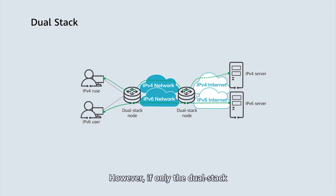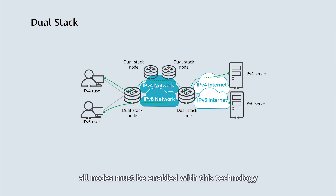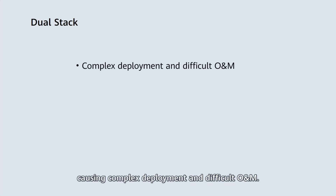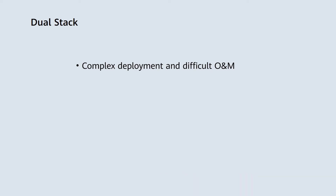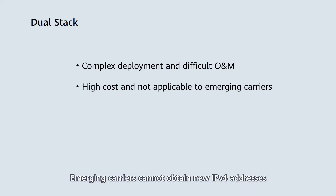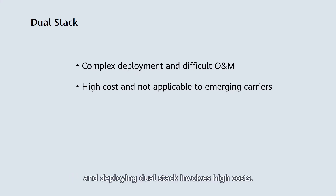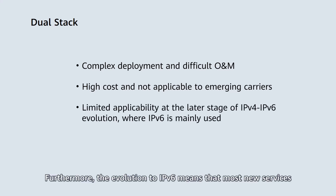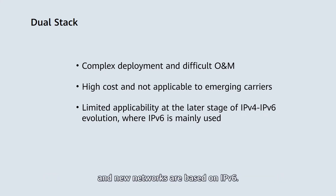However, if only the dual stack technology is used during IPv4 to IPv6 evolution, all nodes must be enabled with this technology in order to maintain both IPv4 and IPv6 networks, causing complex deployment and difficult operation and maintenance. Emerging carriers cannot obtain new IPv4 addresses due to IPv4 address exhaustion, and deploying dual stack involves high costs. Furthermore, the evolution to IPv6 means that most new services and new networks are based on IPv6. This is why dual stack has limited applicability today.